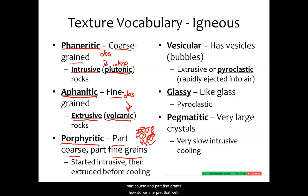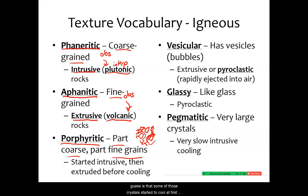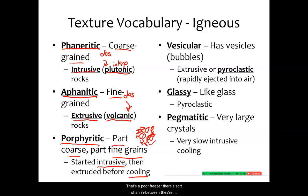How do we interpret porphyritic texture? If we think about it in terms of cooling speed, some of those crystals started to cool first and were able to cool slowly underground — so the first few crystals formed intrusively. But then that slush, the mush of liquid and solid grains, all erupted at once and then cooled quickly from there. So porphyries are an in-between — they're both intrusive and extrusive.